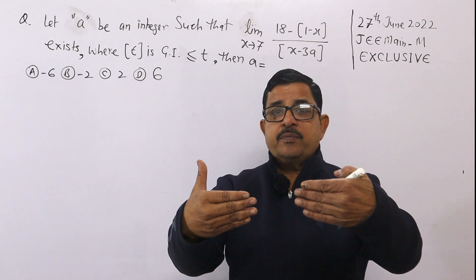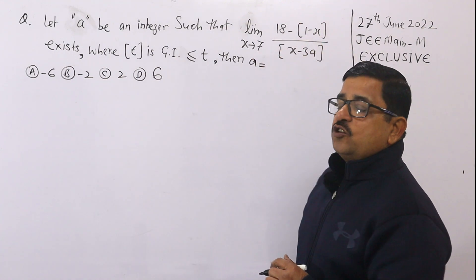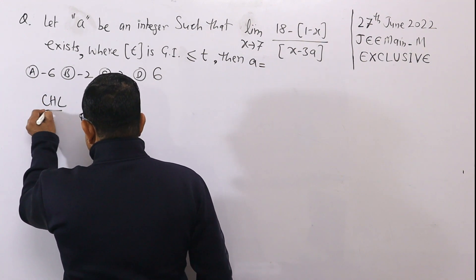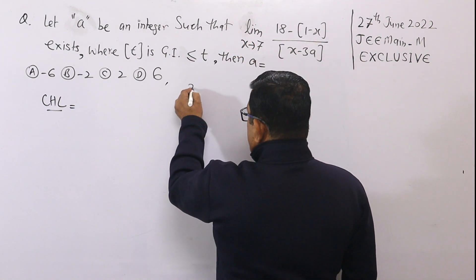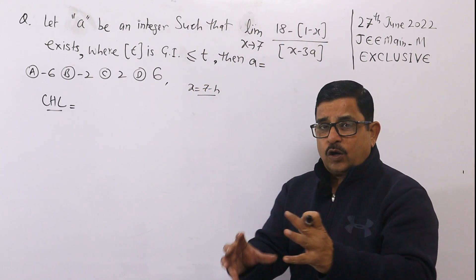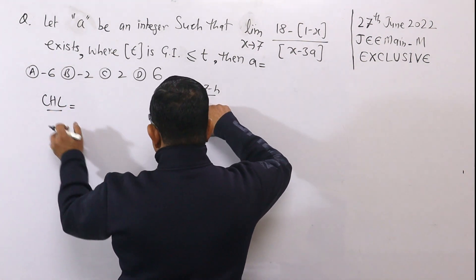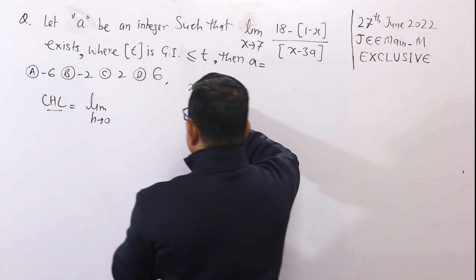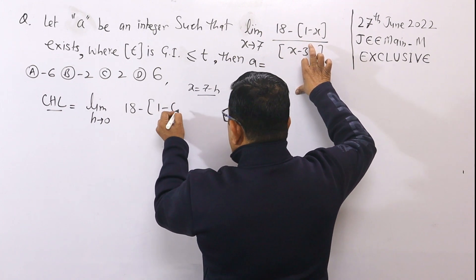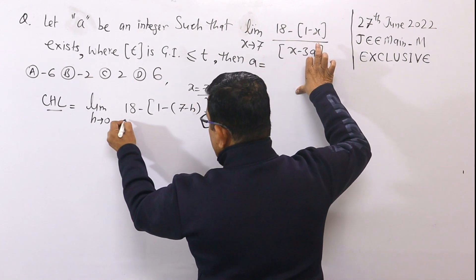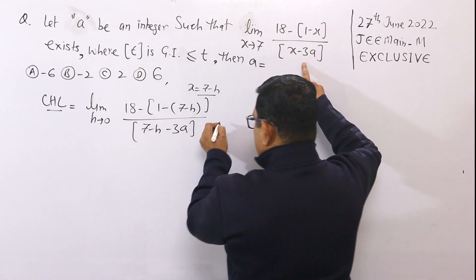Limit exist कर रही है तो सीधा एक ही काम करेंगे — left hand limit और right hand limit को equate करना है, value निकल जाएगी। Main point यह है कि box को किस तरह से open करेंगे। Left hand limit के लिए best तरीका यह है कि x equals to 7 minus h रखके evaluate करें। Limit h tends to 0 लेंगे और x की जगह 7 minus h placement होगी।